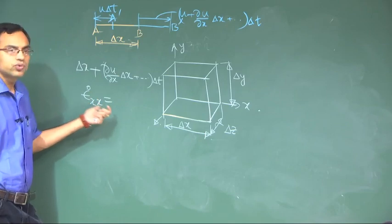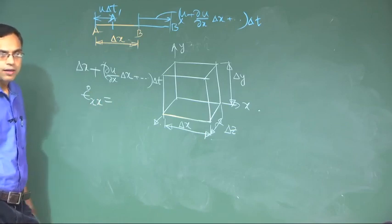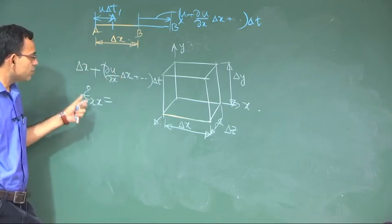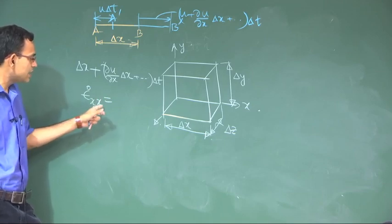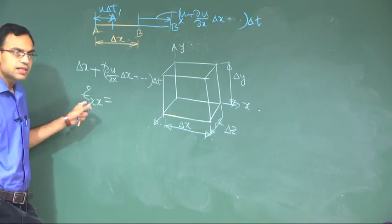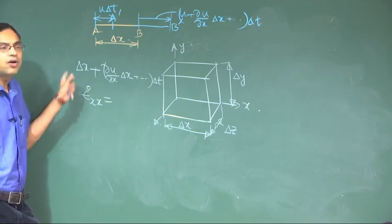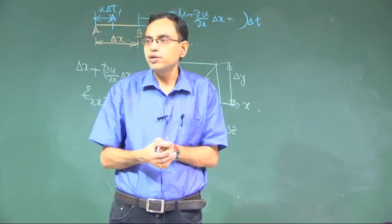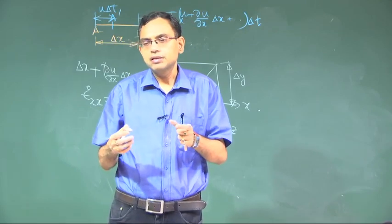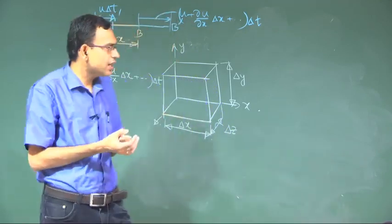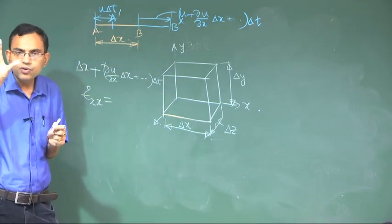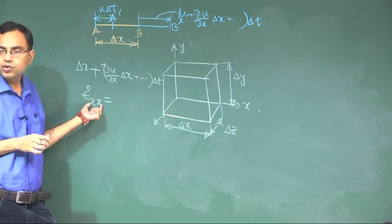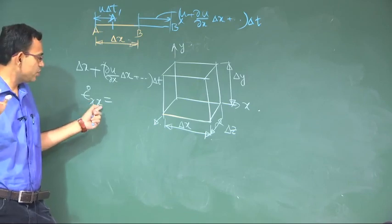I will later explain why two indices are needed, but for now, once we put it in symbols, we will understand that these are not simple scalar quantities, neither are they vectors — these are second order tensors. A second order tensor in Cartesian notation requires two indices for its specification; that is why there are two indices.